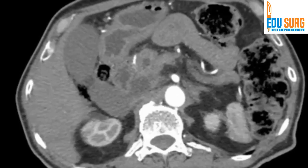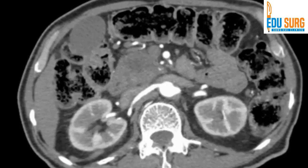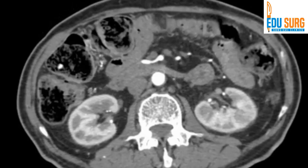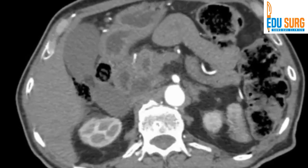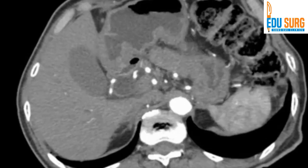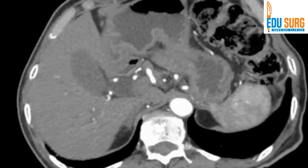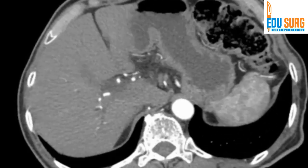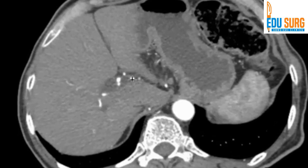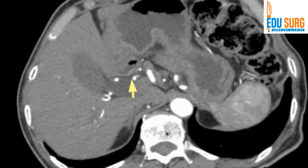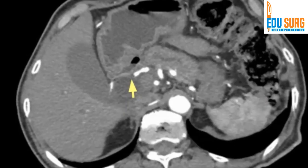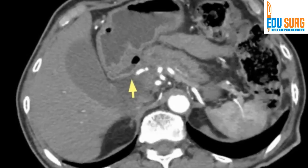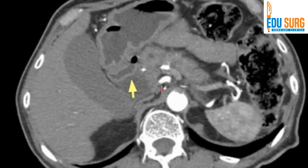We know that the superior mesenteric artery is free from the tumor. We have identified the pancreatic head mass by now. The arterial anatomy is normal — that is the GDA, and the right and left arteries are opening into the celiac. The arrow points towards the proper hepatic artery, and you can see that it is anterior to the portal vein.